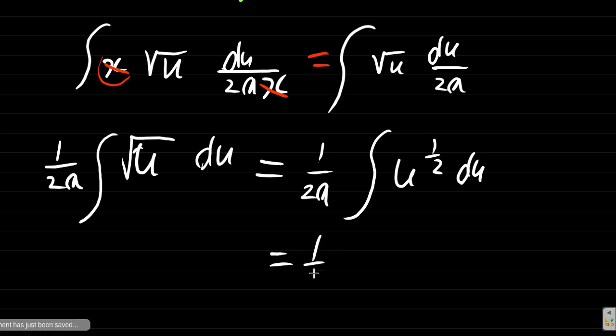So when you integrate this, what you have is u to the half plus 1 giving you the new power over half plus 1, dividing by the new power plus c.